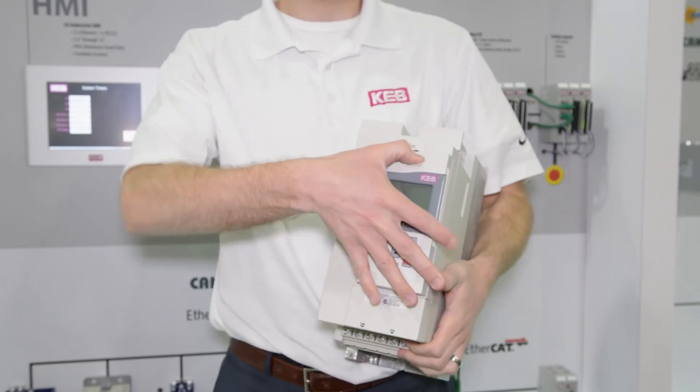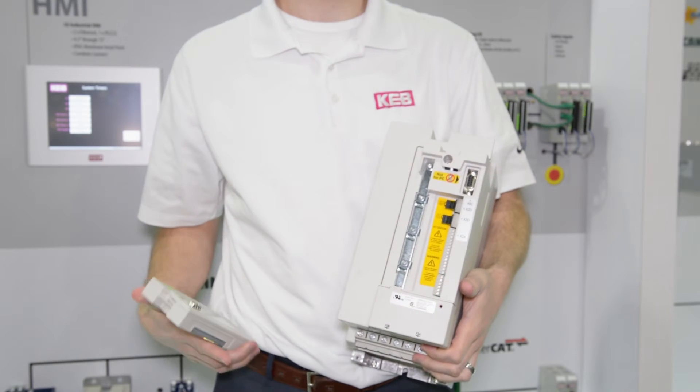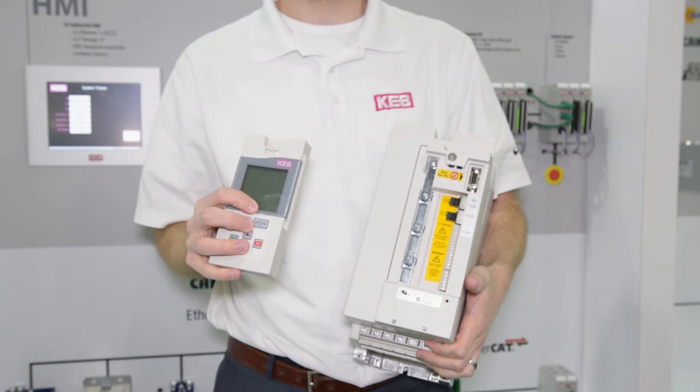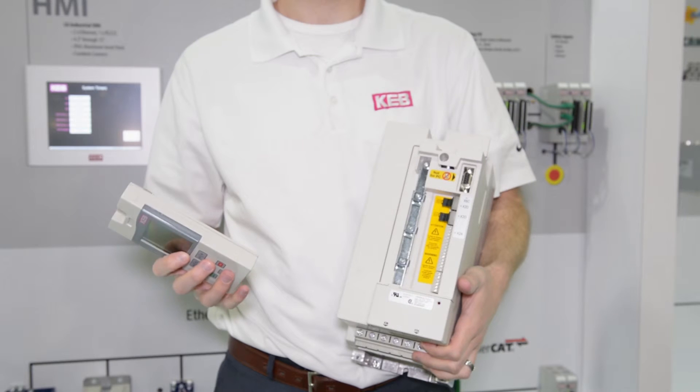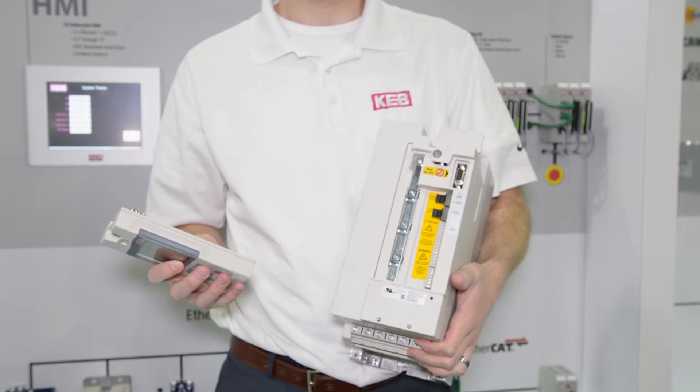The unit has an operator on the front that can be removed. It's with this operator that bus communication can be established with the Regen Unit, so this can be tied together with a master PLC control.